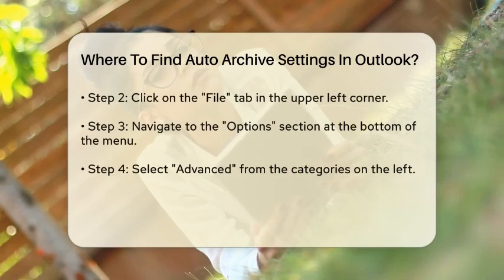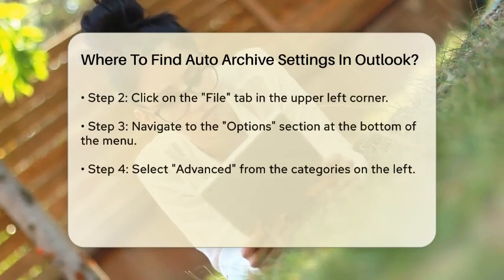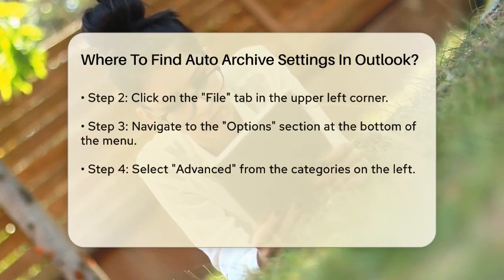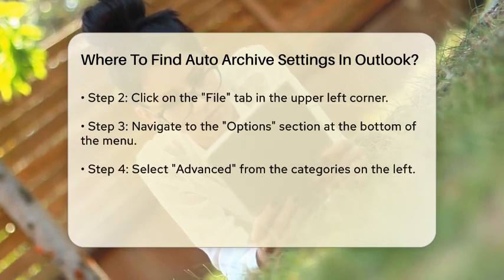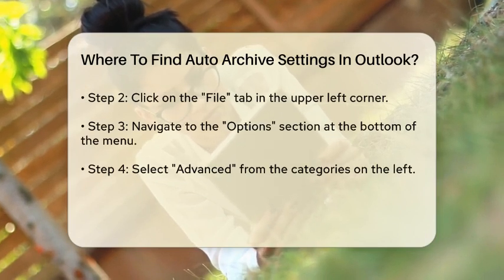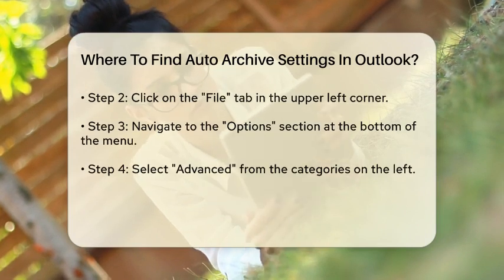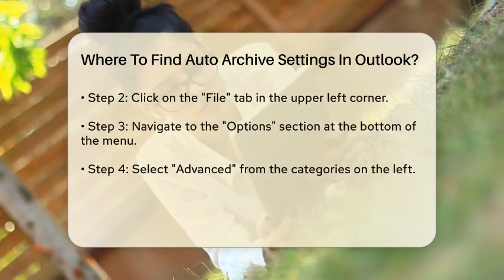To find the auto archive settings in Outlook, start by opening the application on your computer. Once you have Outlook open, look for the File tab located in the upper left corner of the window. Click on it to access the menu.